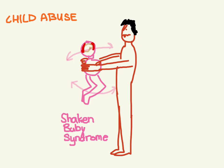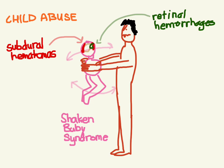You can get intracranial injury and even subdural hematomas. If you examine these patients you'd probably also notice retinal hemorrhages. The compressive forces in the back are going to cause rib fractures, and since they're in the back you're going to see posterior rib fractures.